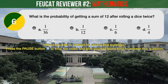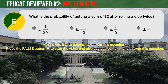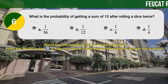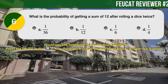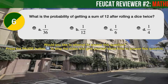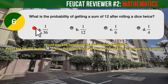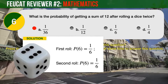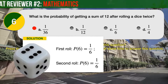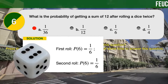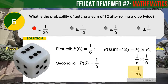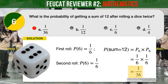Question Number 6. What is the probability of getting a sum of 12 after rolling a dice twice? A: 1 over 36. B: 1 over 12. C: 1 sixth. D: 1 fourth. The correct answer is A, 1 over 36. To get a sum of 12, we must get a 6 on both rolls. The probability of getting a 6 on each roll is 1 over 6, so the probability of getting a sum of 12 is 1 over 36.